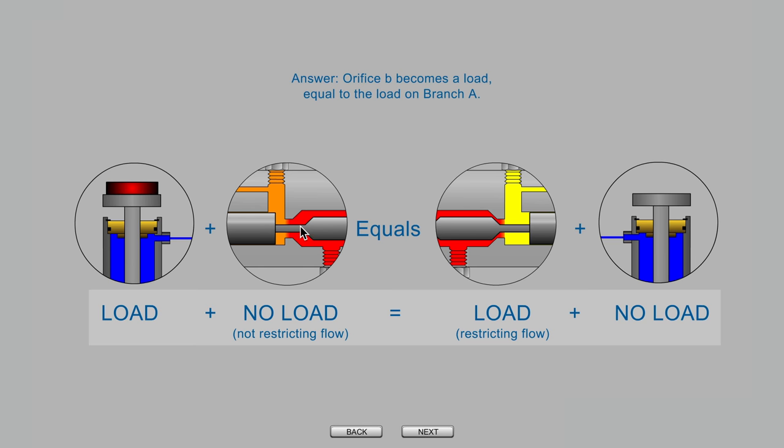and add resistance to the branch on the right where the cylinder has no load, then in the end both the A branch on the left and the B branch on the right are equal to each other in terms of their total pressure load.